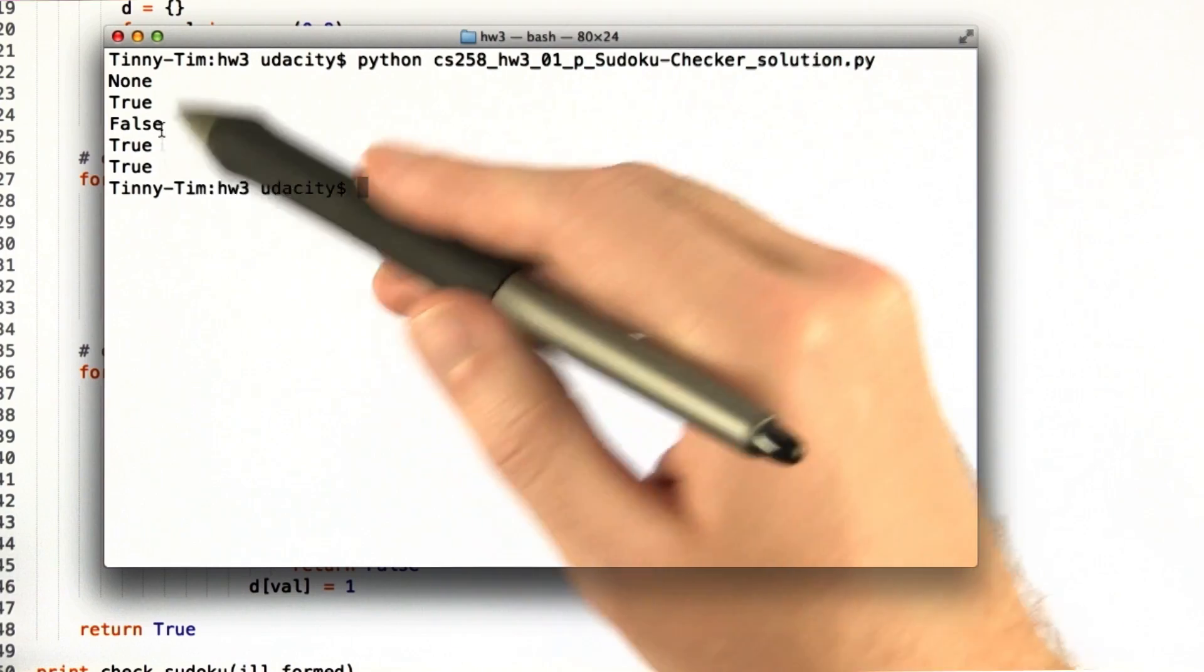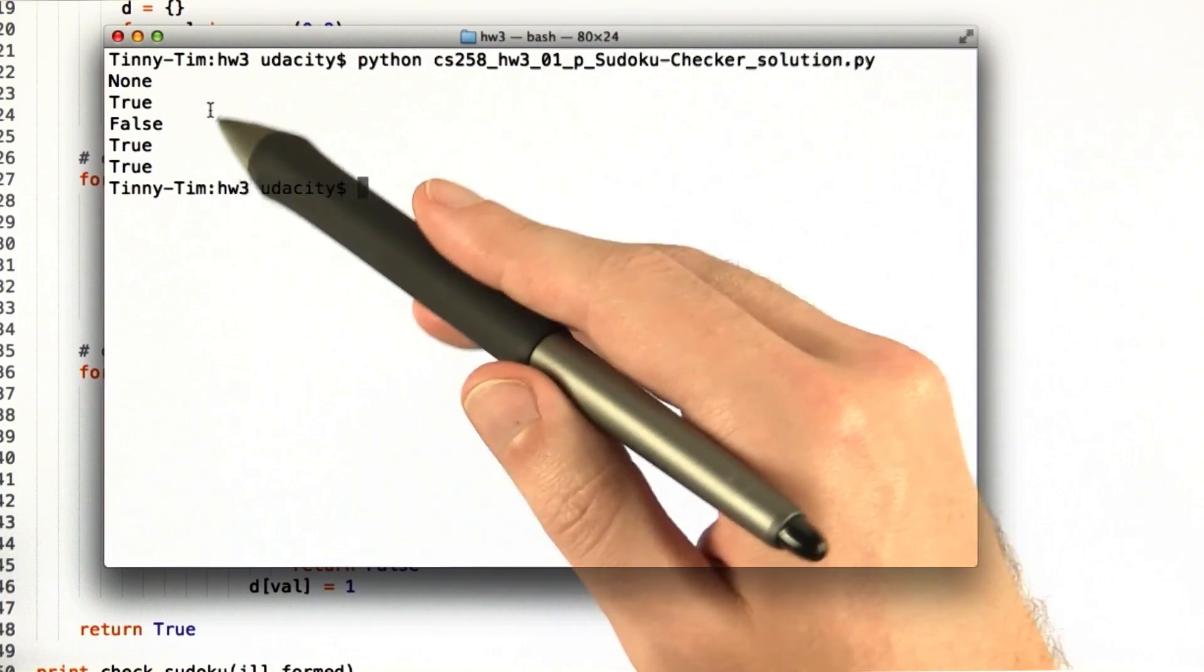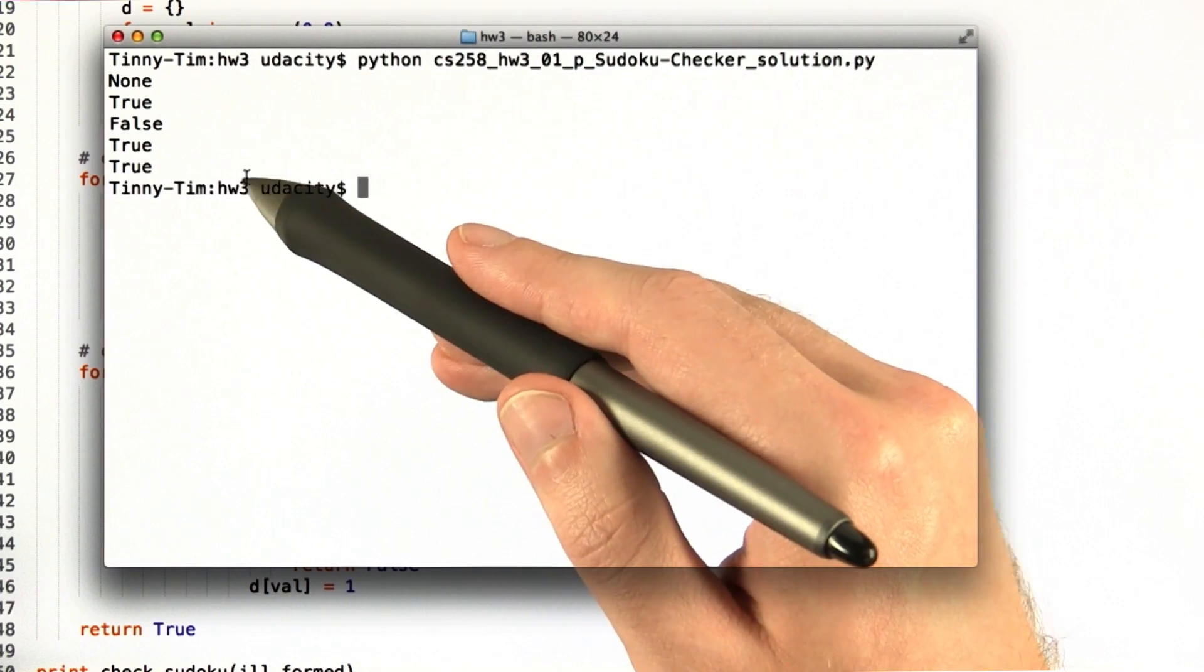Okay, and when we run this solution, we see that we get the same output that we were supposed to get for the five test cases that we're given.